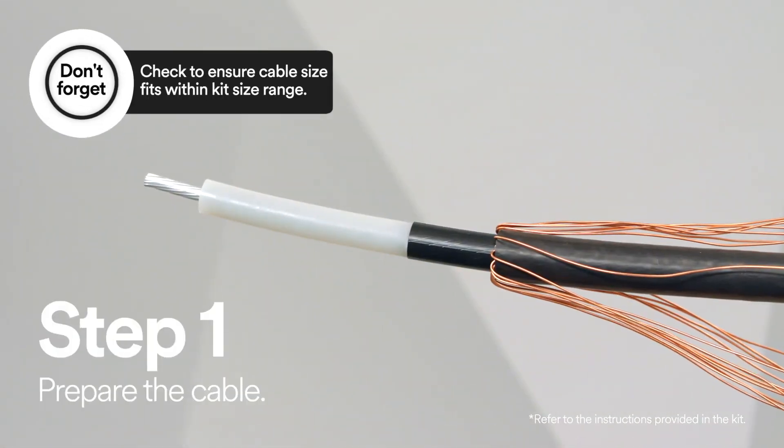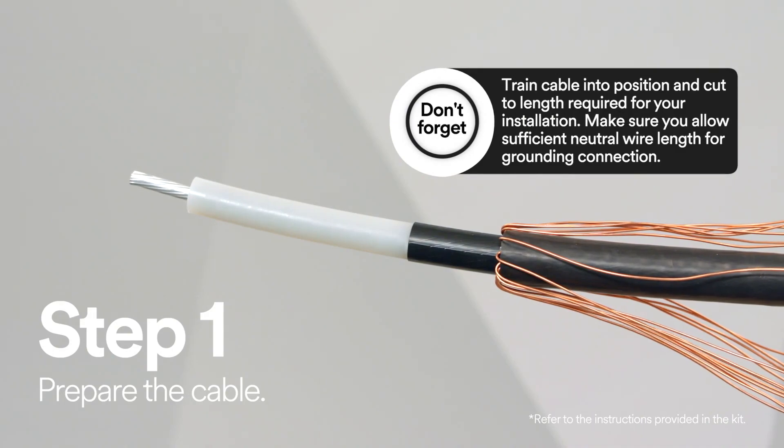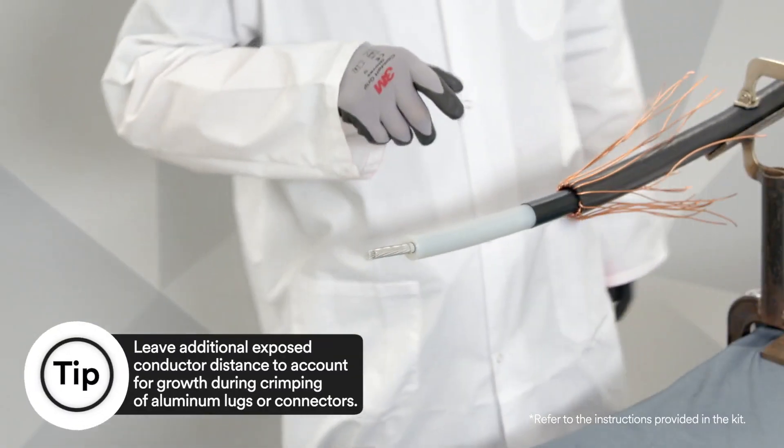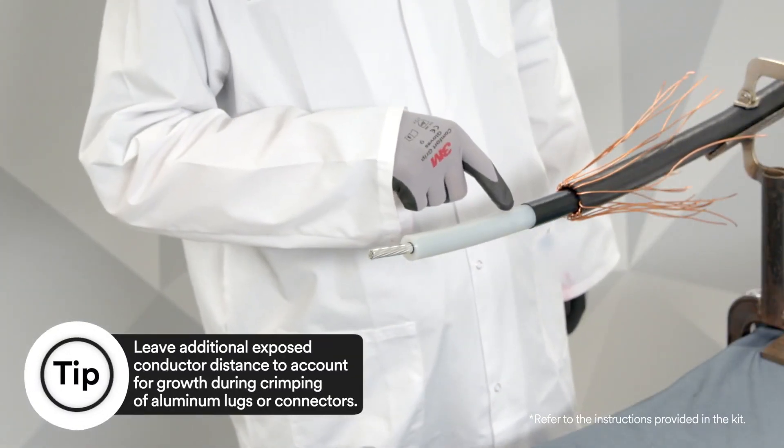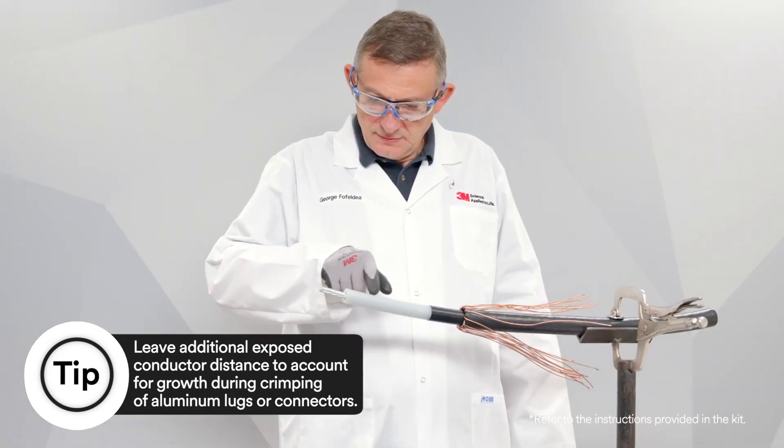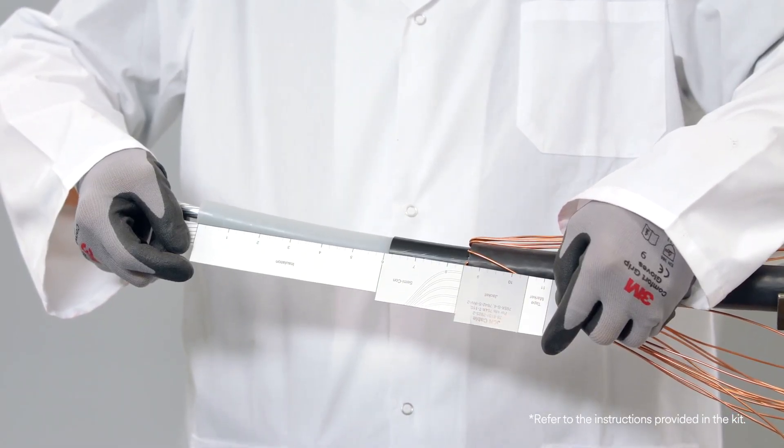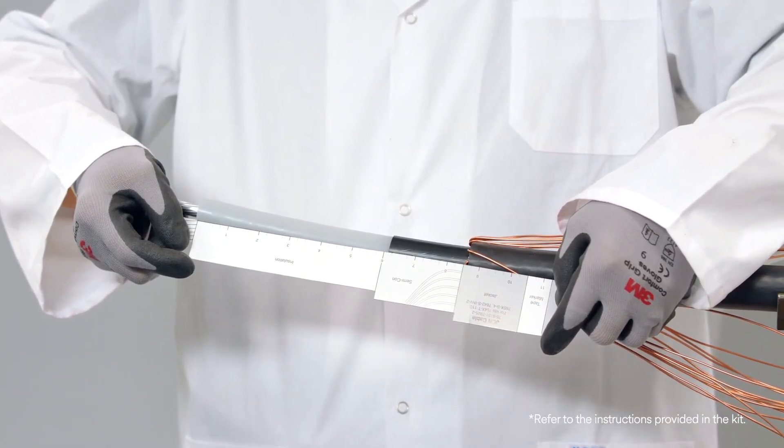The first and important step in the 3M Cold Shrink QT3 silicone rubber skirted termination install is to prepare the cable according to standard practices. It is important to make sure that you've removed all remnants of the semi-con layer, even if the semi-con layer comes off as one layer. You don't want to have any remaining black areas or particles on the cable insulation layer.